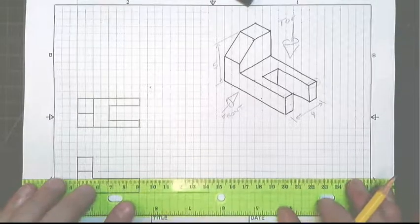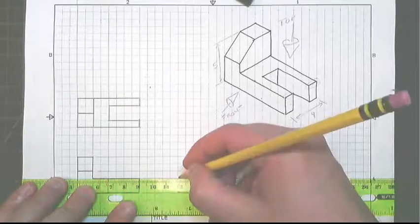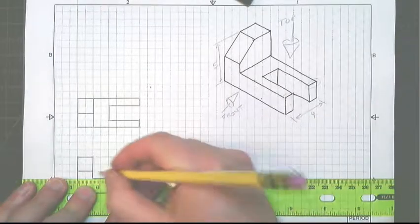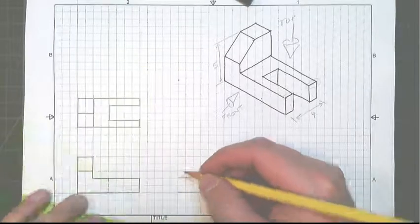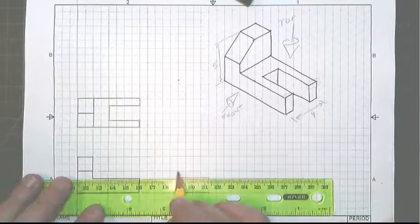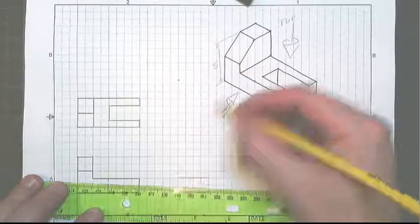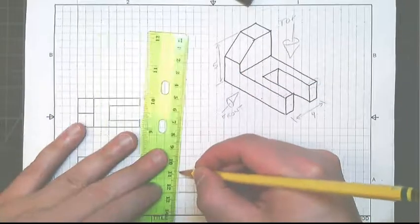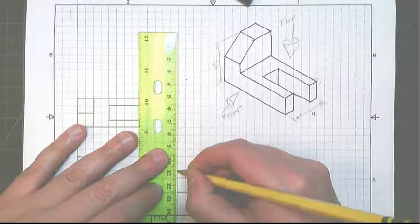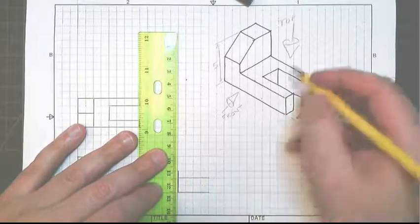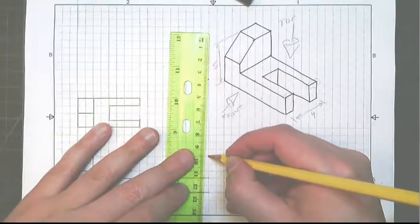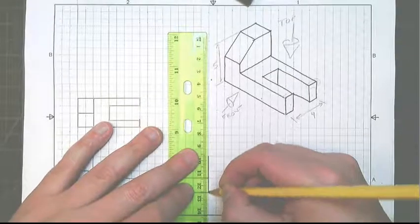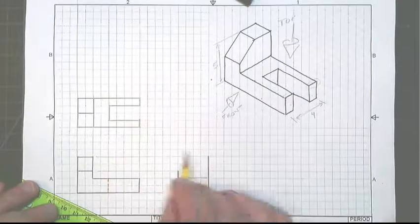If I line up my top view, I'll see that that surface and that surface are the same. This construction line right here is indicating this edge, so I can draw up to that. And the whole thing is five tall, so on the right side, one, two, three, four, five. And that lines up to that.